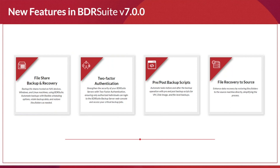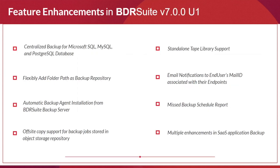The pre- and post-backup scripts help protect and secure your data when stored in your storage repository. Next is file recovery to the source — one of our most requested features. Previously, file-level backups could only be restored to the backup server as a download link. Now, users can restore data directly to the exact source machine — to the same folder or another folder within that machine.